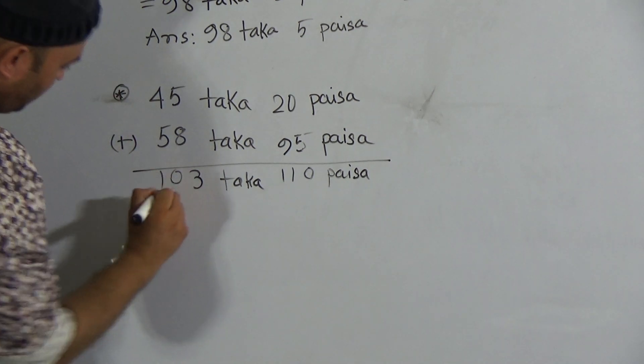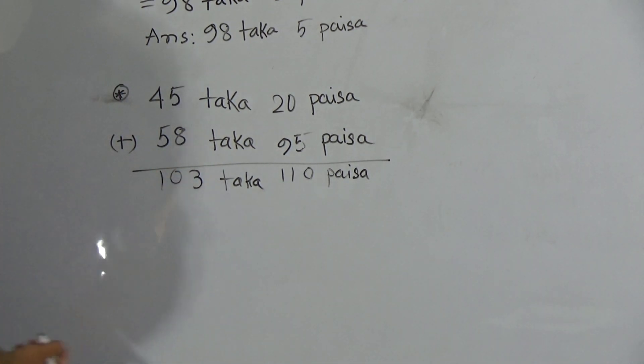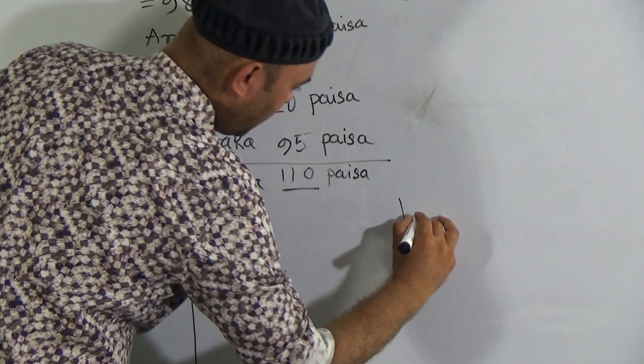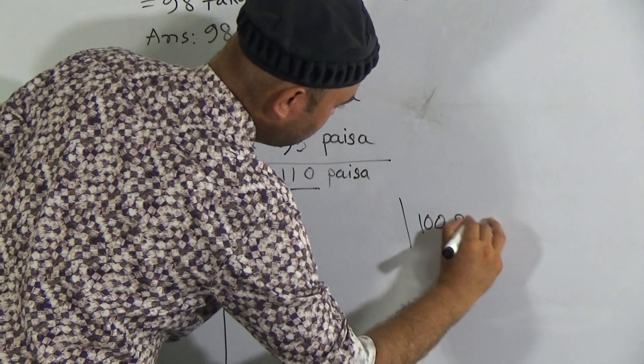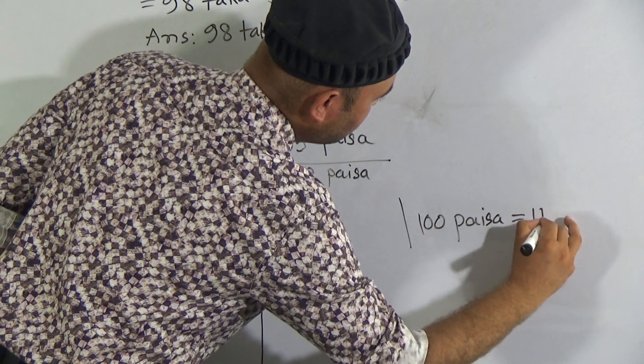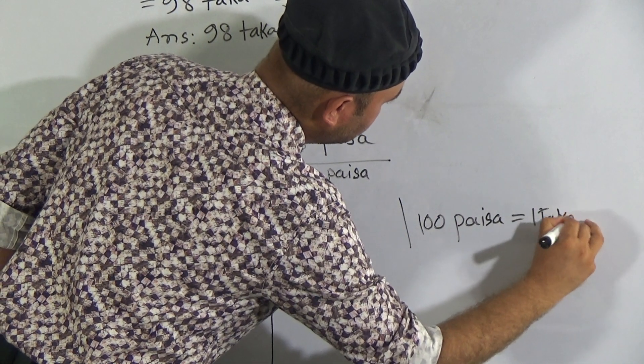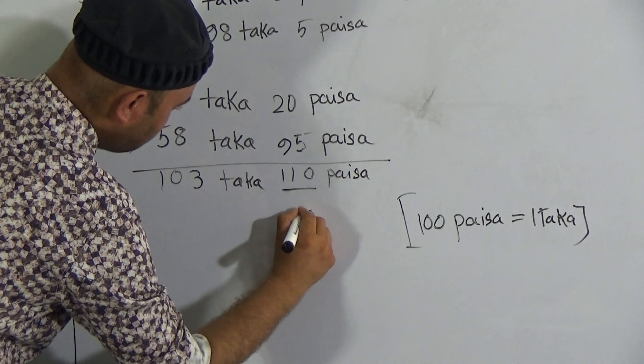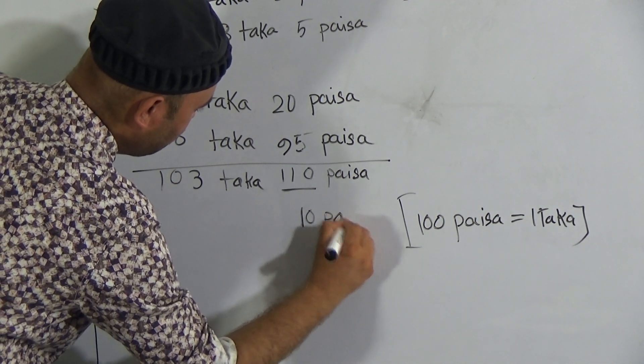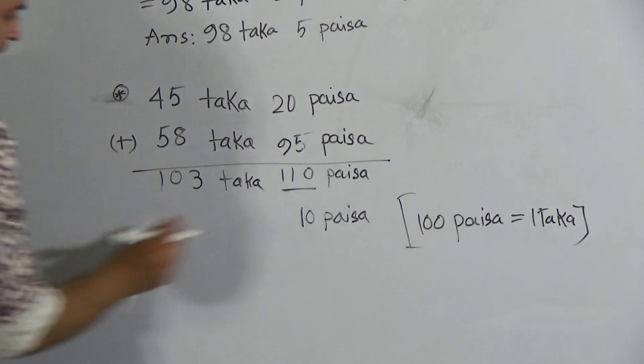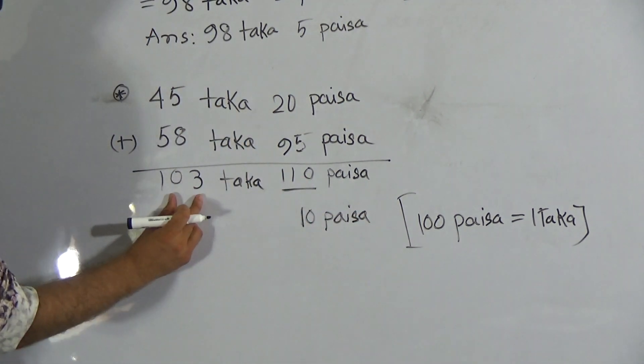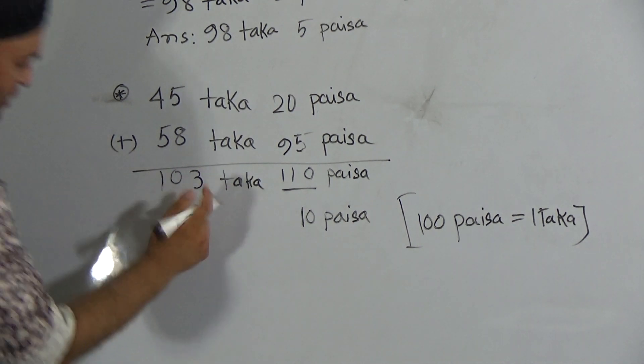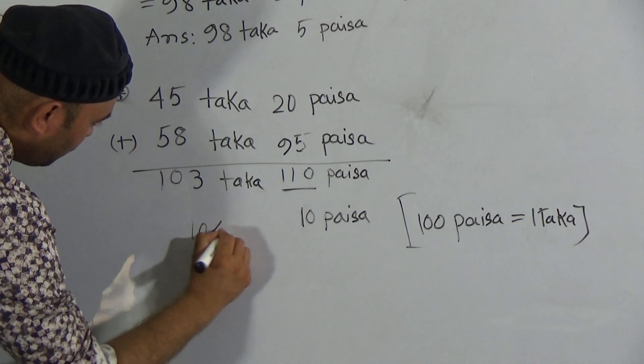So here it will be 110 paisa and we know that 100 paisa makes one taka. So we can write 10 paisa as remaining after taking 100 paisa, and add this 100 paisa with this one. 100 paisa makes one taka and here is 103 taka, so it will be 104 taka.